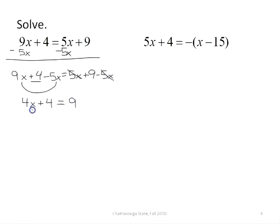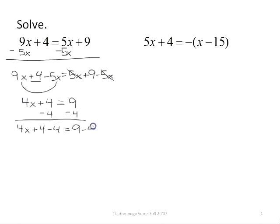Now I want to get rid of the terms that don't contain x. Since it's a 4 that's being added to my x term, to get rid of it I'm going to subtract it. I'll write it both ways: 4x plus 4 minus 4 equals 9 minus 4, because I subtracted 4 from both sides. The positive 4 minus 4 is 0, so my left side has 4x, and on the right side 9 minus 4 is 5, giving me 4x equals 5.